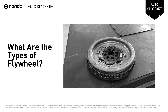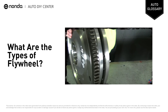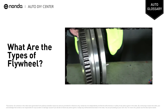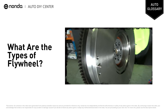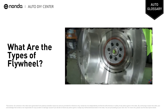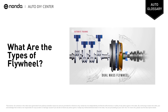A dual-mass flywheel is basically two flywheels with springs in the middle to act as a dampener. The two flywheel halves are able to move independently of each other within a limited range. The springs help absorb engine vibration, which reduces wear on the transmission and the rest of the drivetrain. The benefits of a dual-mass flywheel are smooth operation and dampening of noise, vibration, and harshness.